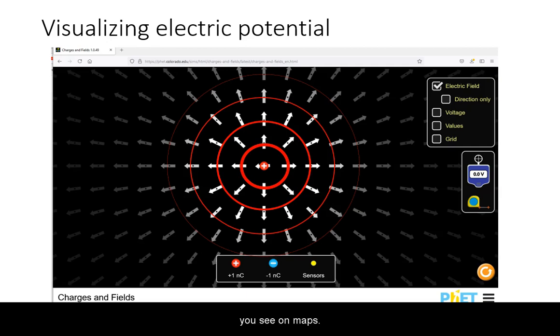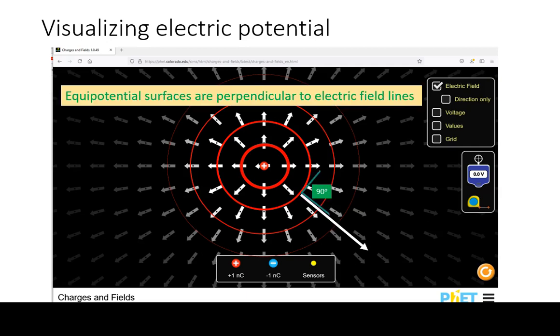Because equipotential surfaces, by definition, are contours along which the potential is the same, and the electric field gives you the direction of the changes in potential,